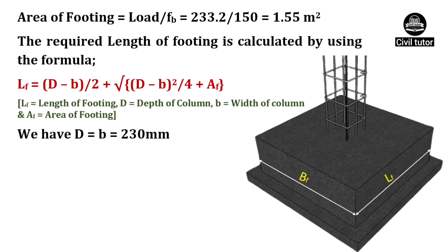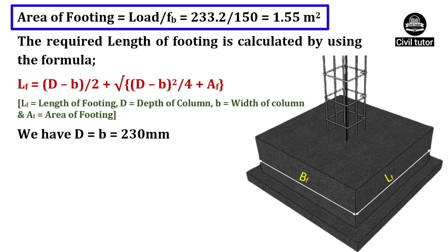Now, we need to calculate the area of footing, which is given by the formula: area of footing equals load divided by safe bearing capacity. Total load is already calculated as 233.2 kN and the safe bearing capacity is given as 150 kN per meter square. On substituting these values, area of footing will be equal to 1.55 meter square.